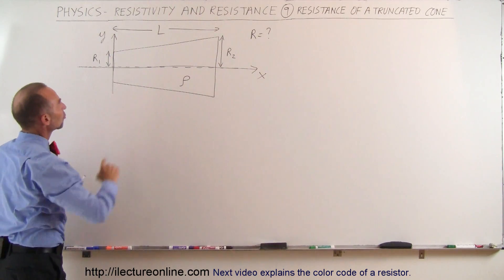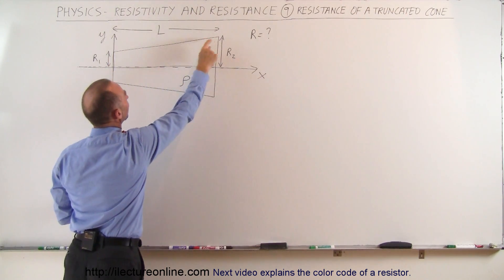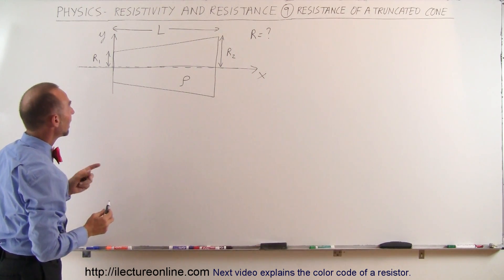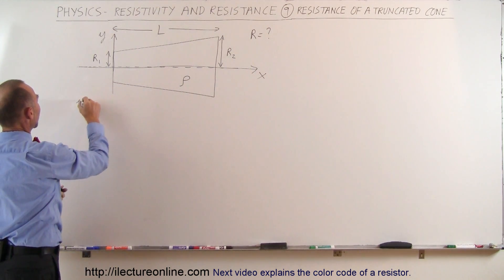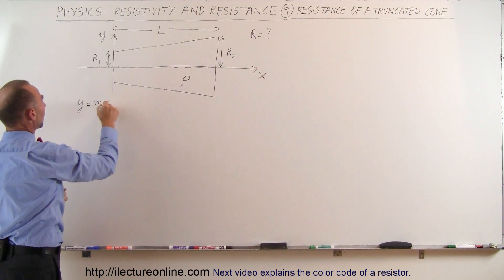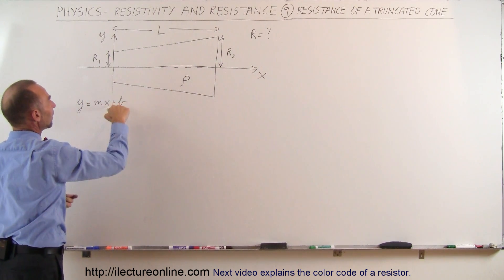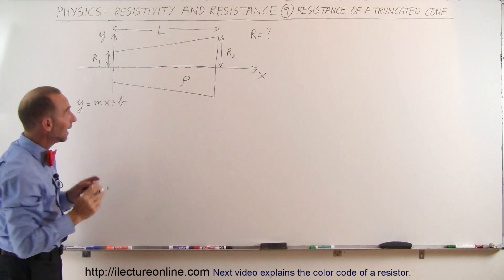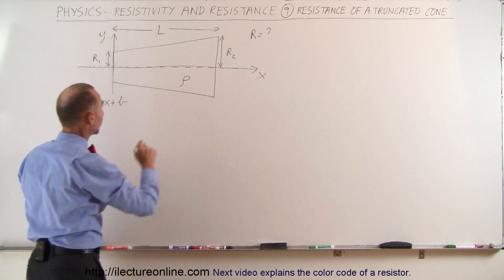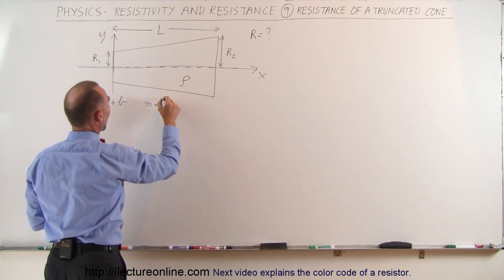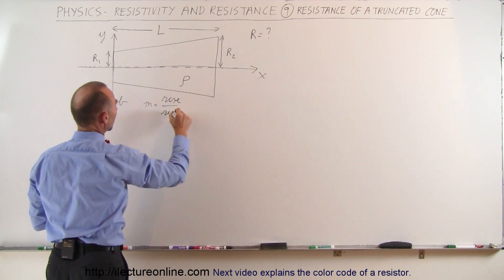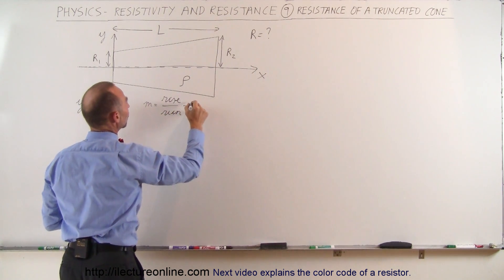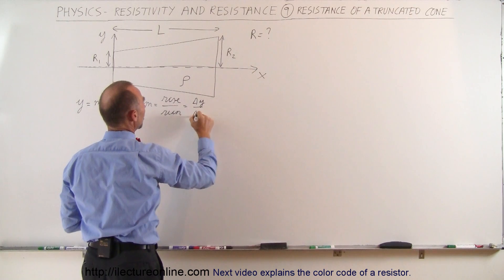Now we're going to try and find the equation describing the top end of this truncated cone. Remember, this is three-dimensional here, and you can see that this would be something like y equals mx plus b, m being the slope of the line and b being the y-intercept. The slope m is equal to the rise over the run, which is equal to the change in y over the change in x.